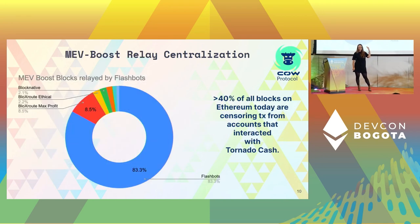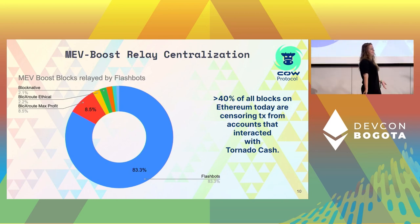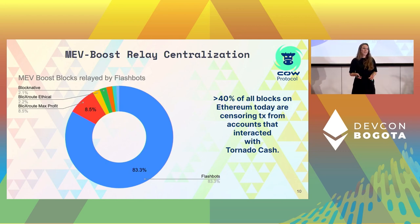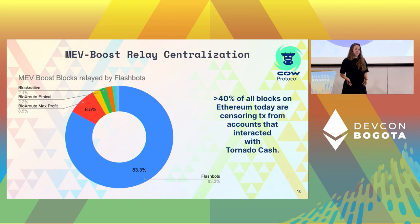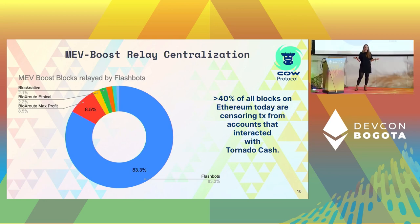Let's go one level further and look at the relays themselves. MEV Boost was created by the Flashbots team but it's open source, so anyone can create their own relayer with their own rules for the competition. However, the relay created by the Flashbots team is by far the most dominant one — it has 83% market share.